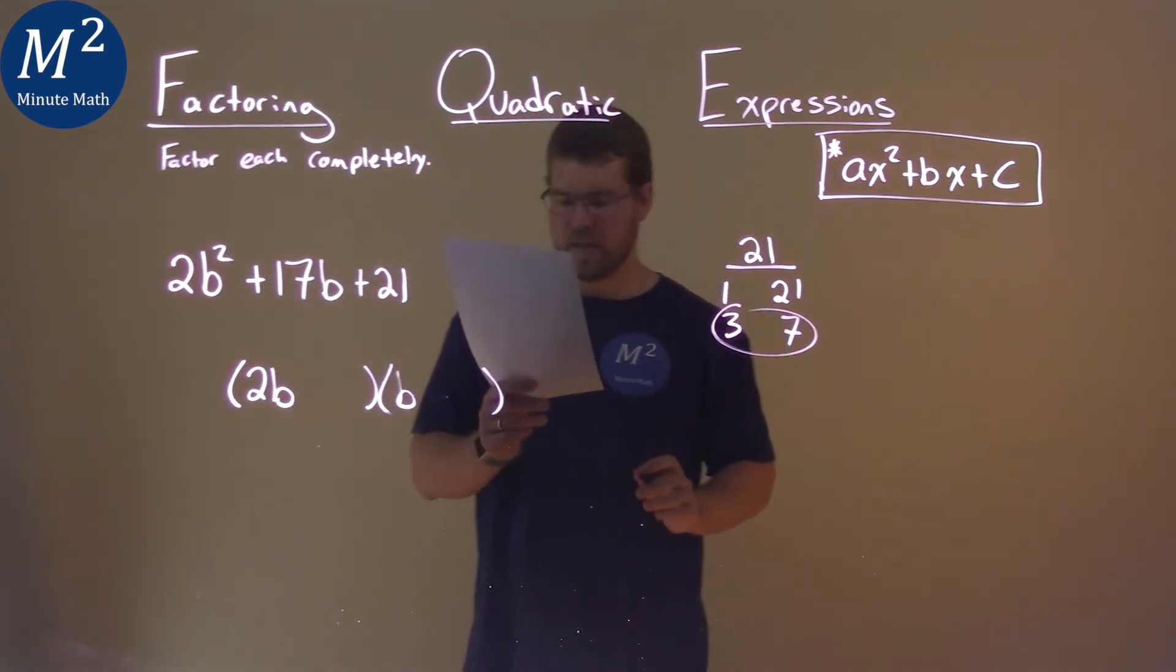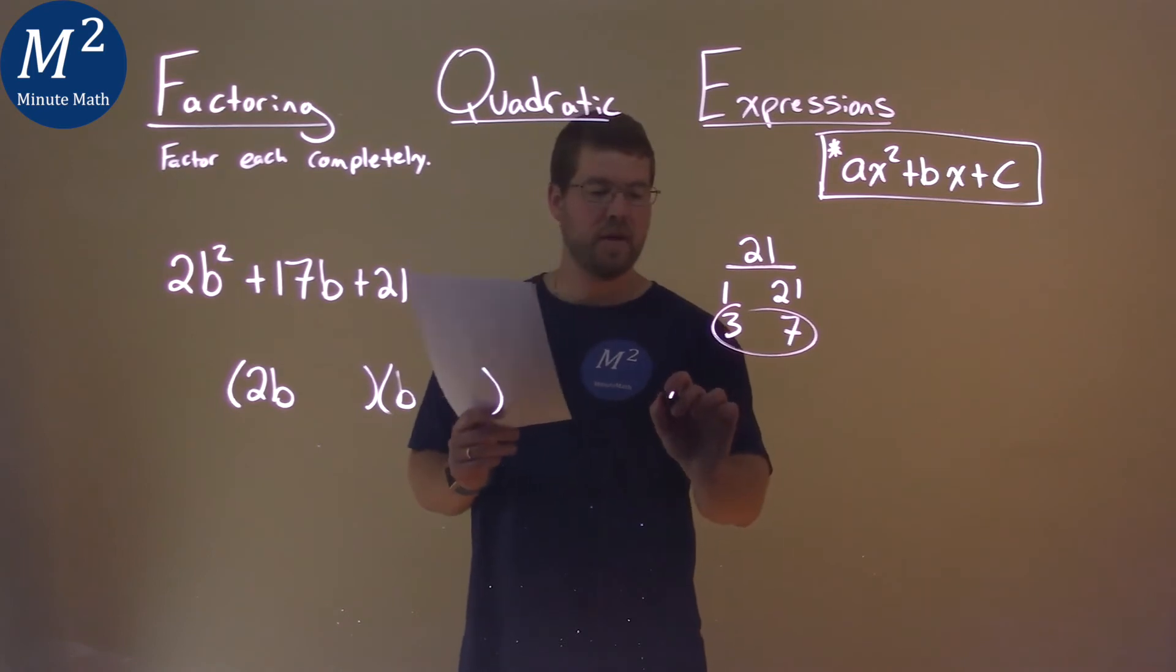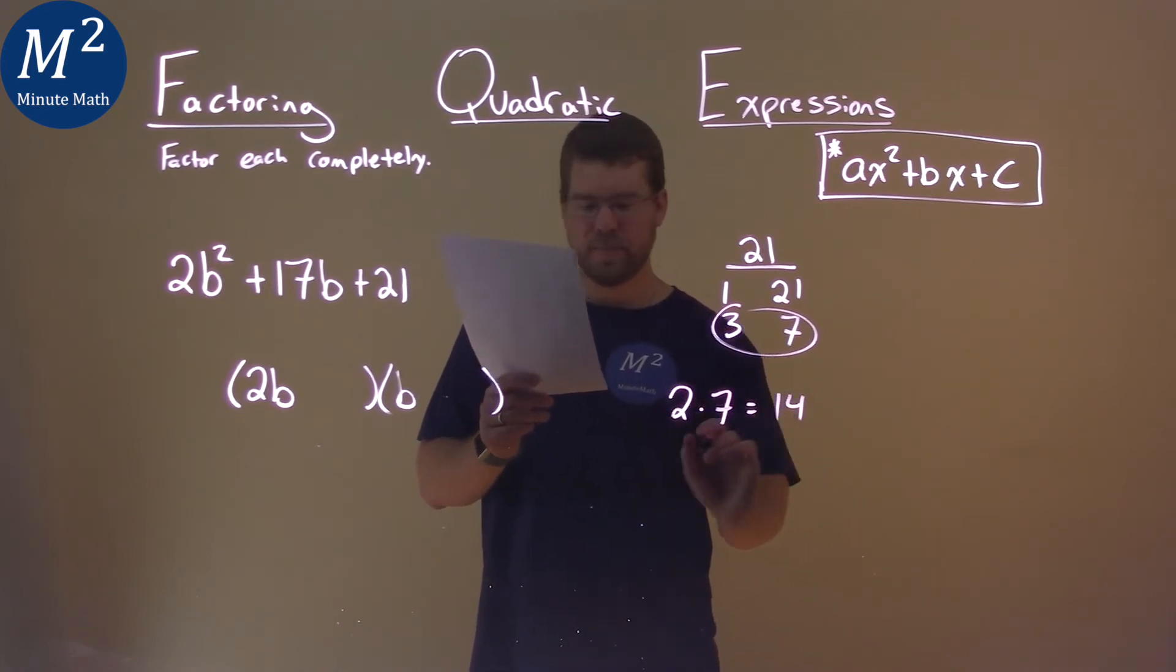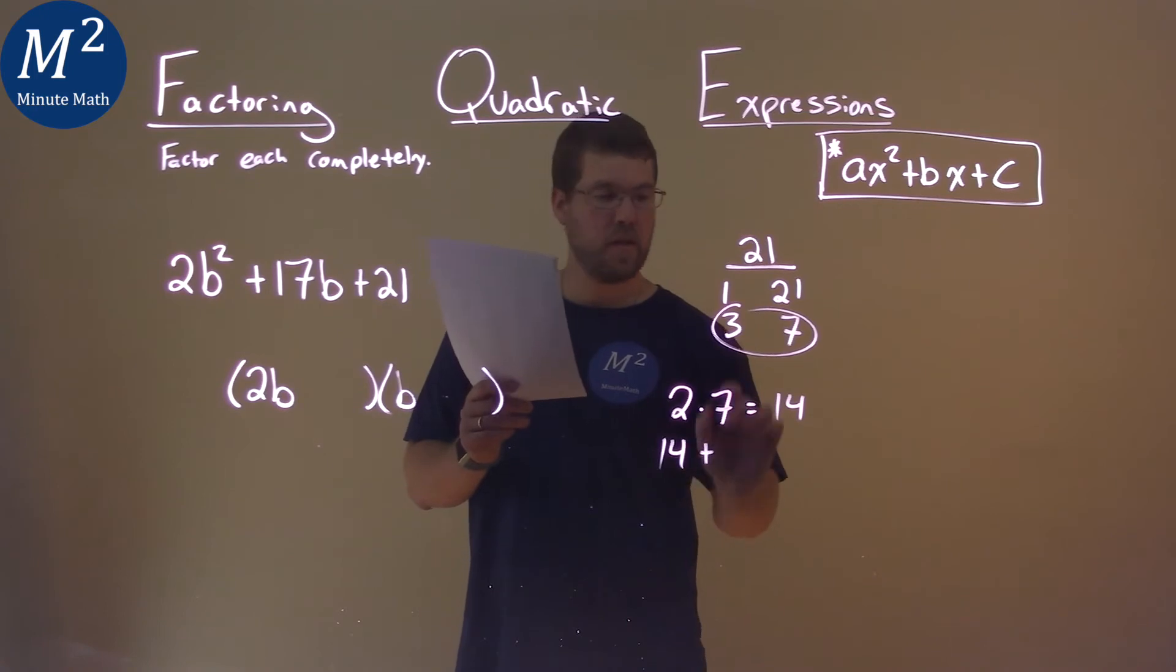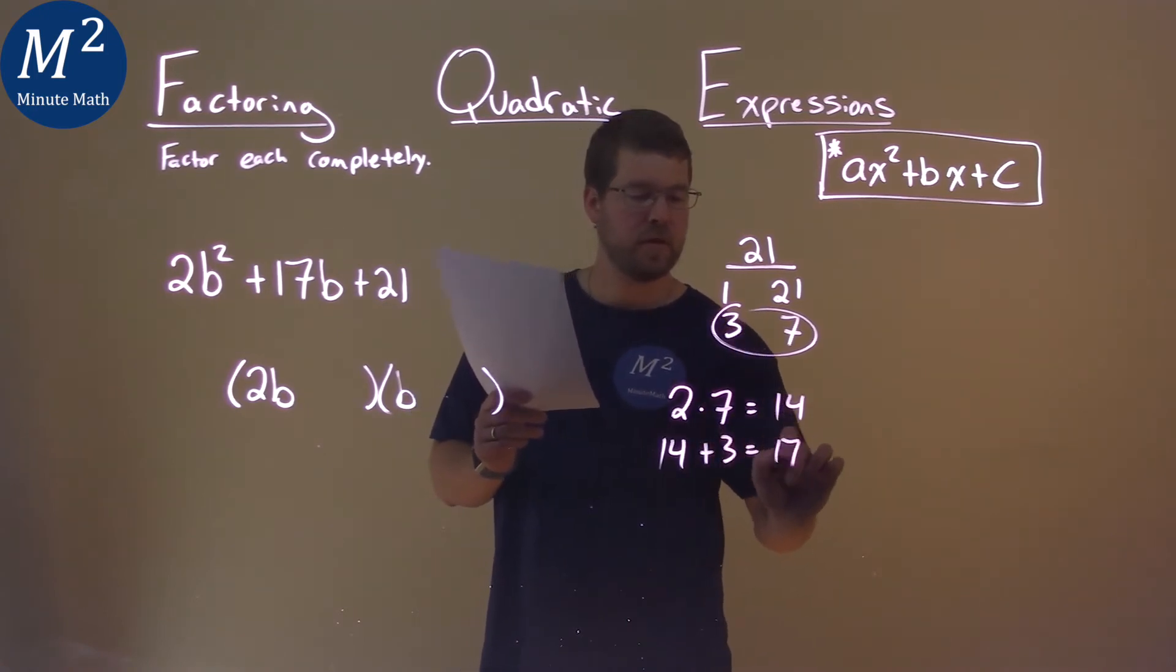So my pair here is actually that 3 and 7, and we can see that here. 2 times 7 equals 14, then 14 plus the other number 3 equals 17.